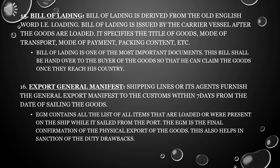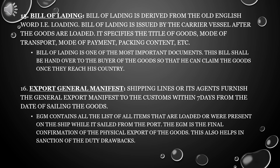Sixteenth, Export General Manifest (EGM). Shipping lines or their agents furnish the Export General Manifest to the customs within seven days from the date of sailing the goods. EGM contains a list of all items that are loaded or were present on the ship while it sailed from the port. The EGM is the final confirmation of the physical export of the goods and also helps in the sanction of duty drawbacks.